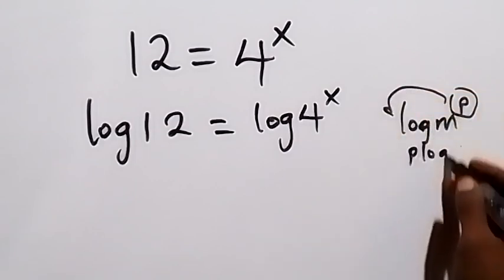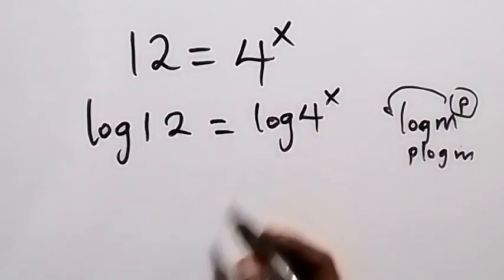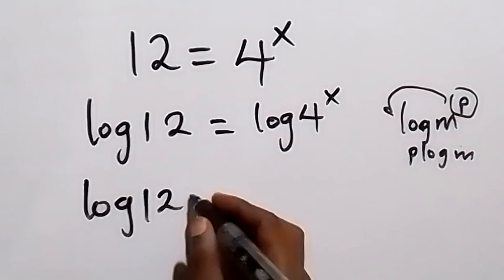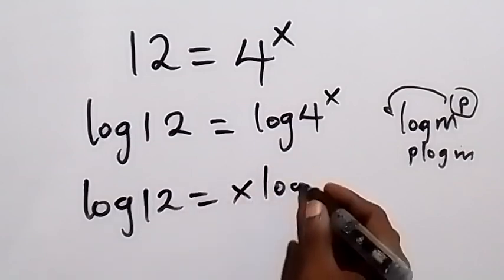So when we apply that here, this x comes to the back here and this becomes log 12 equals to x log 4.